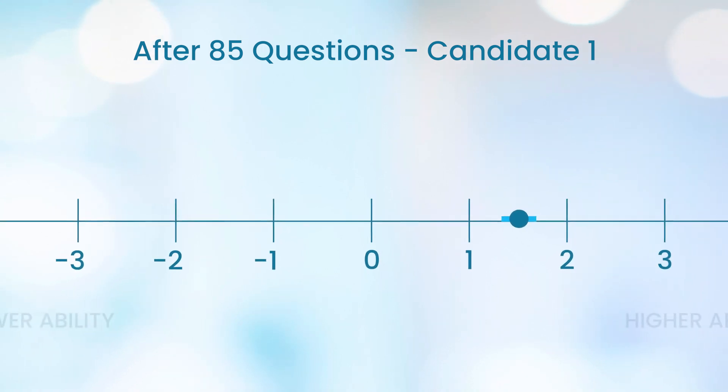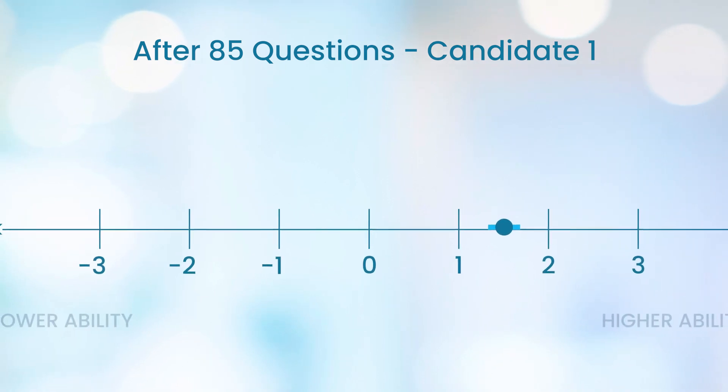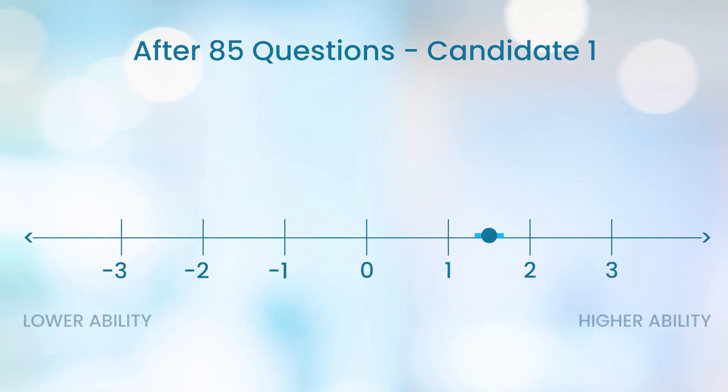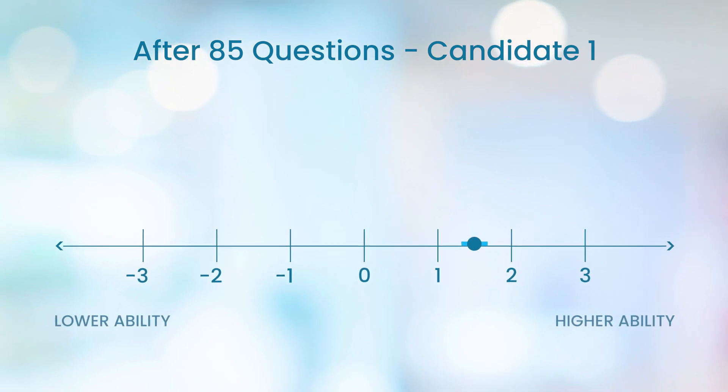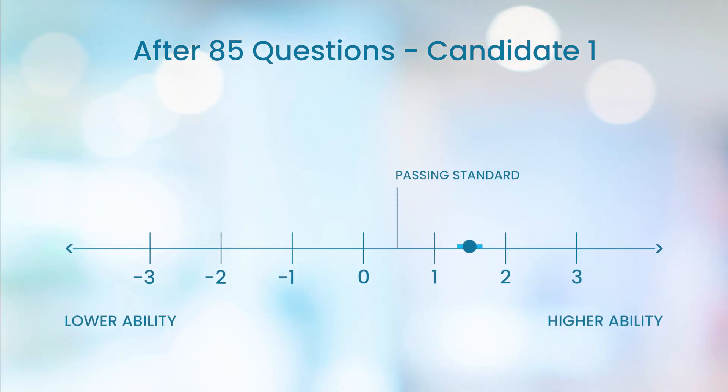In fact, our ability estimate is now so precise that we may have enough information to determine whether this candidate should pass or fail the exam. For the remainder of this video, we will assume the pass/fail cutoff, sometimes known as the passing standard, is at 0.5.